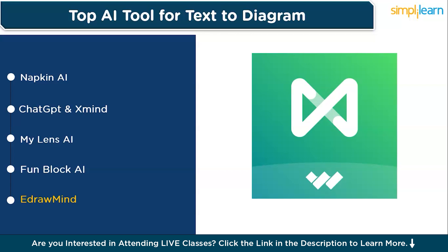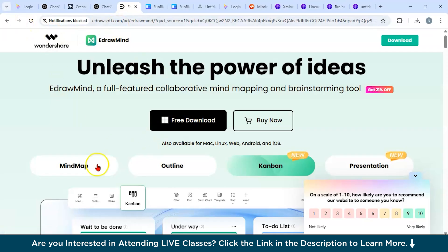The tool allows easy export to multiple formats including images, PDFs, and even PowerPoint slides, making it perfect for presentations. You can also collaborate with team members in real time. Whether you're outlining business strategies or mapping personal projects, eDrawMind simplifies the diagramming process. Pricing: there is a free version with limited templates; the premium plan starts at $99 per year for advanced templates and additional features.